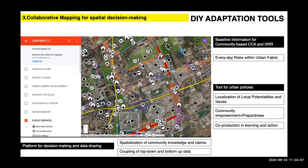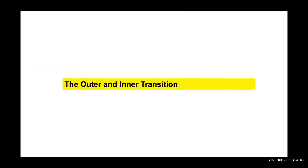This urban-scale mapping tool is an attempt to set new instruments for co-production of knowledge — something that can be used by both the community and decision-makers, making a bridge between the three parties engaged in co-production processes. The last part we will see today is set instead on grassroots initiatives, specifically on the transition movement.